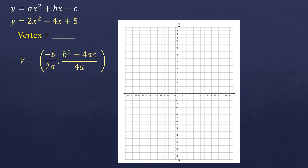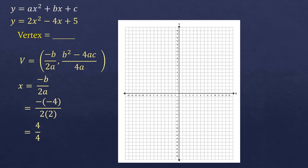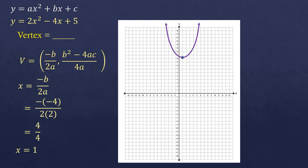Let's solve for the x-coordinate of our vertex. The formula is negative b over 2a. Based on our given, b is negative 4 and a is positive 2. Substituting: negative of negative 4, all over 2 times 2. Negative times negative 4 is positive 4, and 2 times 2 is 4. So it becomes 4 over 4, which equals 1. The x-coordinate of the vertex is 1, meaning the graph is located at x equals 1, but we're not yet sure of the y-coordinate.